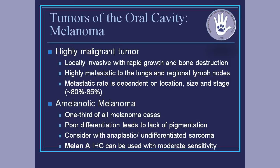There are a few melanomas near the hair aspect of the mouth, those mucocutaneous junctions, that carry a little bit more benign behavior and tend to be more like the melanomas we see on the skin. Skin melanomas — haired skin melanomas — are a totally different disease. Those are less aggressive with a pretty low metastatic rate and are fairly well controlled with surgical removal. When it gets in the mouth, I treat all of those as malignant until proven otherwise.